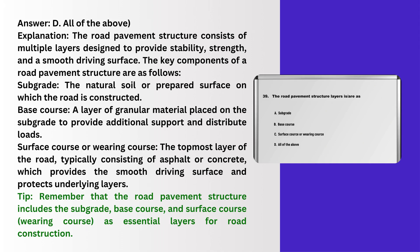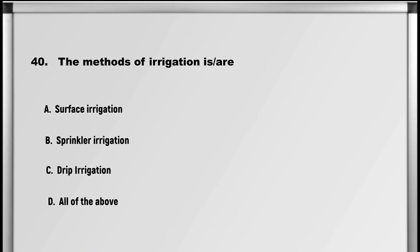Explanation: The road pavement structure consists of multiple layers designed to provide stability, strength, and a smooth driving surface. The key components are: Subgrade — the natural soil or prepared surface on which the road is constructed; Base course — a layer of granular material placed on the subgrade to provide additional support and distribute loads; Surface course or wearing course — the topmost layer of the road, typically consisting of asphalt or concrete, which provides the smooth driving surface and protects underlying layers. Tip: the road pavement structure includes the subgrade, base course, and surface/wearing course as essential layers for road construction.